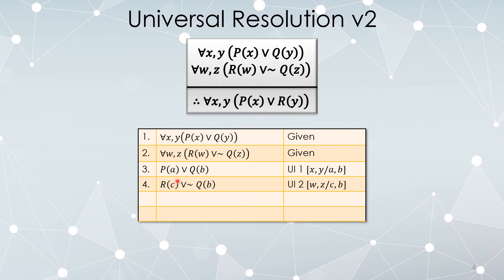Because now I have two disjunctions, one of which has this statement, Q of B, and one of which has this statement, not Q of B. Since these are exactly the same statement, we can resolve them. P of A or R of C.